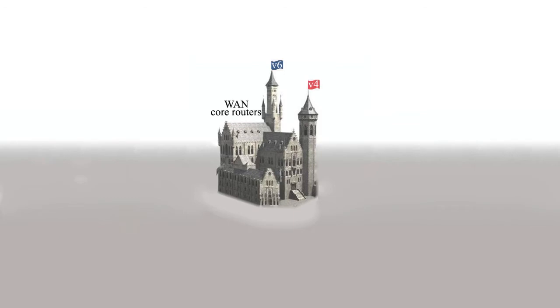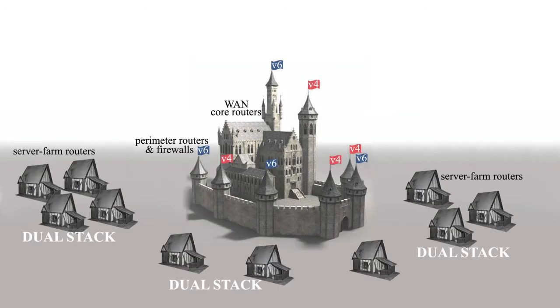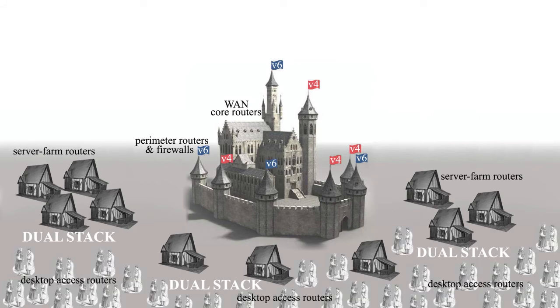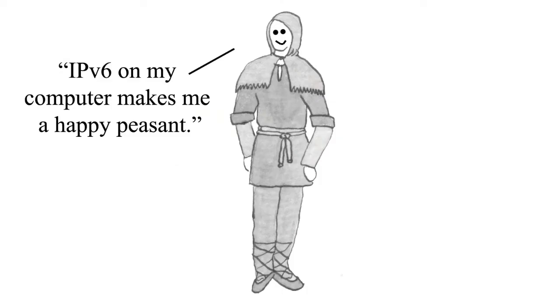A common transition movement is to start with equipment at the core and then move to the edge. You would enable two protocol stacks on WAN core routers, then perimeter routers and firewalls, then server farm routers, then desktop access routers. This deployment scheme will enable dual protocol stack on each of your servers and then finally on each of your edge computer systems.